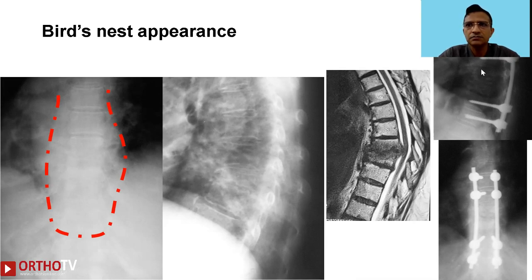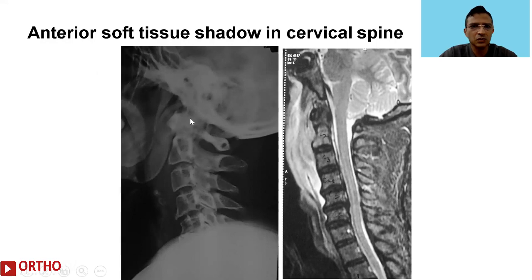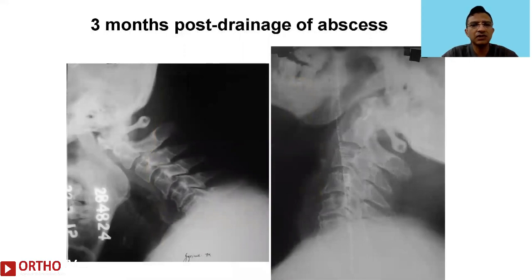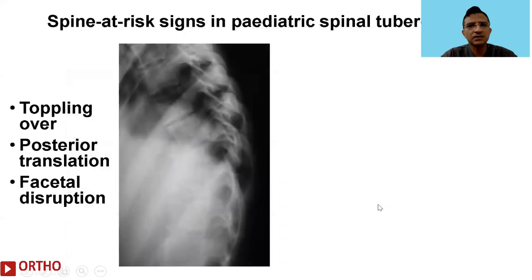We are orthopedic surgeons and we tend to look at bones, but beyond the bones we also need to look at the soft tissue. Here is an illustrative case where the soft tissue shadow has increased in the anterior aspect of the cervical spine. When we did an MRI, we found a pre-vertebral abscess causing a mass effect that had to be drained — it was due to a small exudative Koch's type lesion at C2.